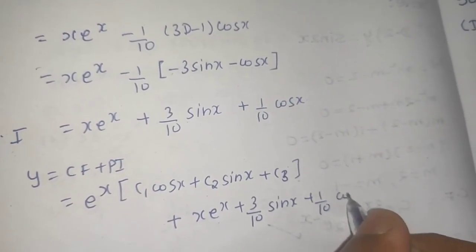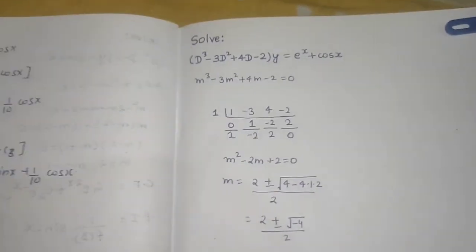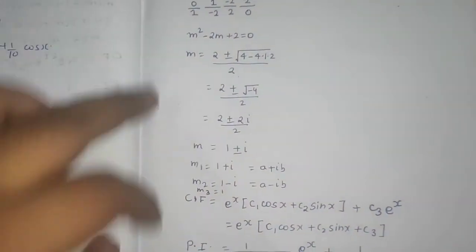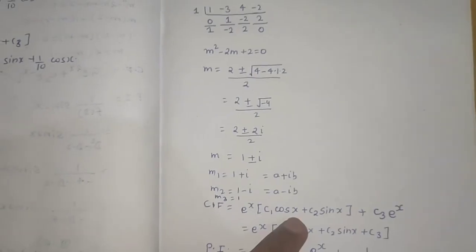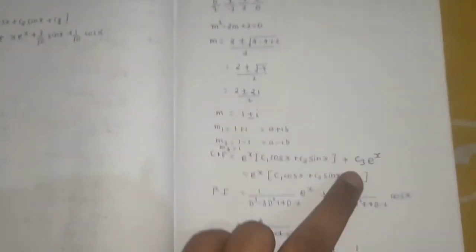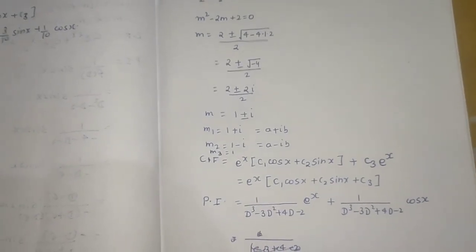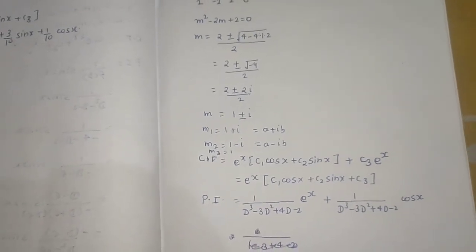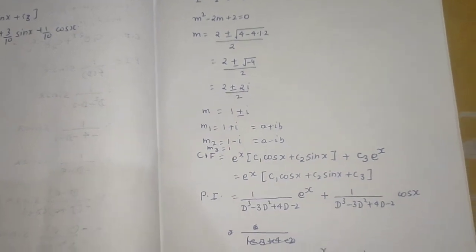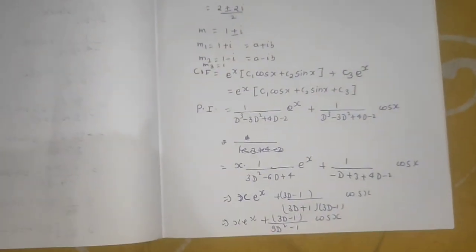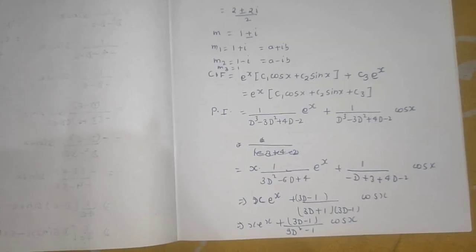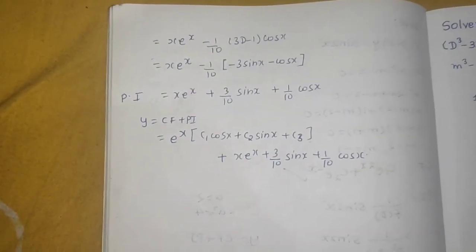The complete solution is y = e^x(c₁cos x + c₂sin x + c₃) + xe^x + (3/10)sin x + (1/10)cos x. It's a lengthy question but straightforward once you know the rules for complex roots and the modified rule for repeated factors in the particular integral.